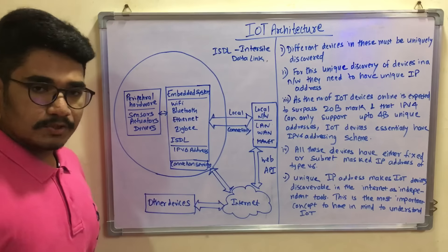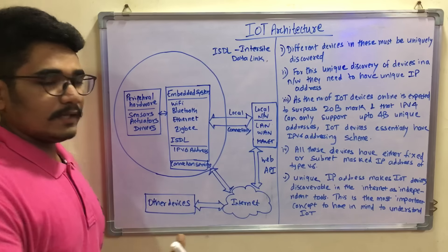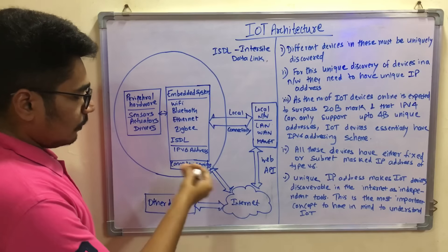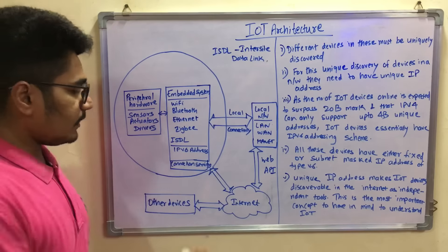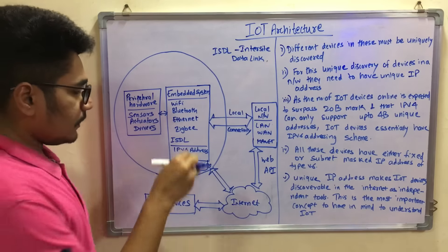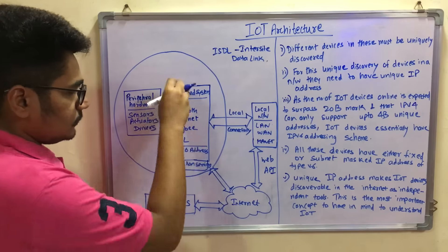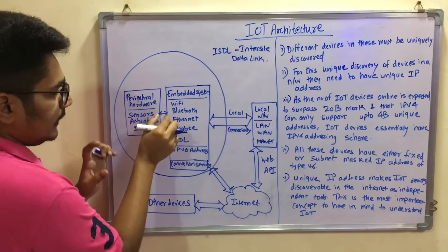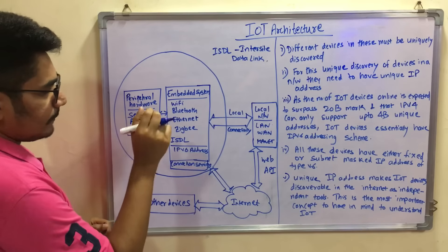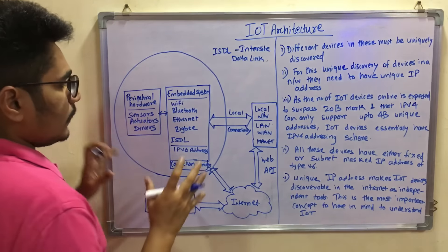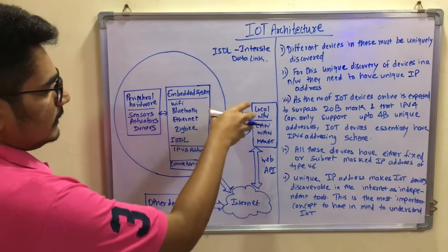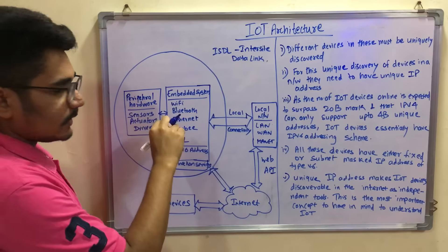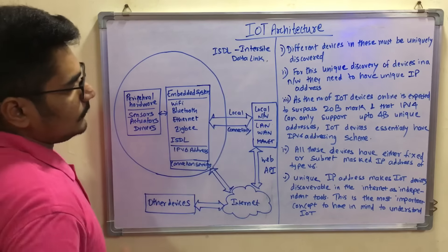Then you have connection services, which can include any number of things such as storage mechanisms. All of this sums up to the embedded systems. These two — peripheral hardware and embedded systems — are linked for interconnectivity, and on the other side we have local connectivity.